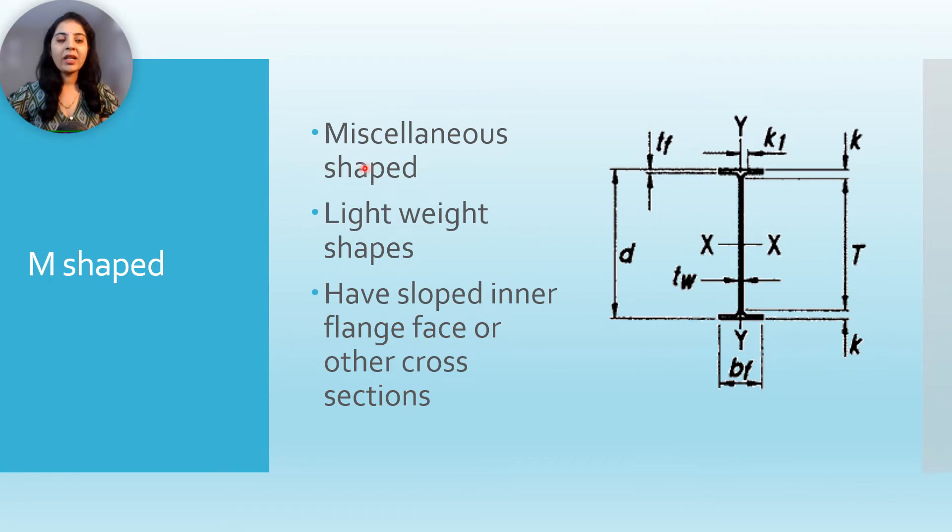M shape, that is miscellaneous shape. These are lightweight shapes and they have slope inner flange surface or other cross sections. And this is the cross section with the designations.